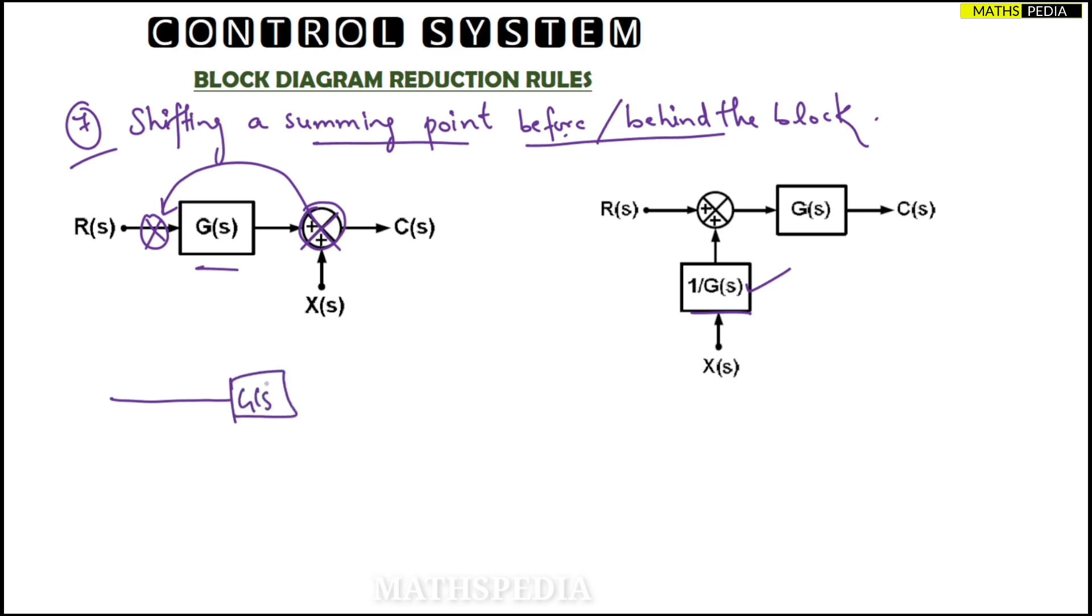This is G(s). I want this here. I had here a summing point. This has to be shifted before, right? So I will paste it over here. So I paste it over here. Now this is C(s). Now with that I had X(s) signal, and here R(s). This you observe, it has been shifted from this point to this point. It has been shifted.